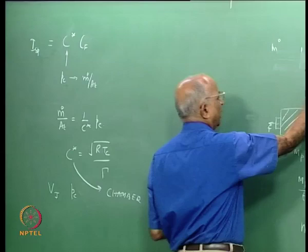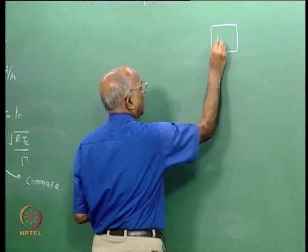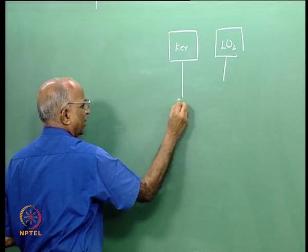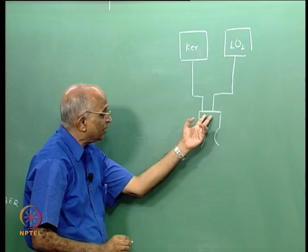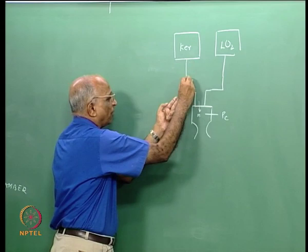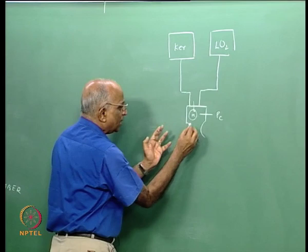For example, suppose I have a tank of liquid kerosene and another tank of liquid oxygen. I take both into a chamber, push them in, and generate a high value of Pc. The total propellant mass (kerosene + liquid oxygen) burns and produces Pc. Therefore C-star tells me the capacity of the propellants to generate a high chamber pressure.